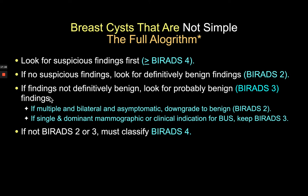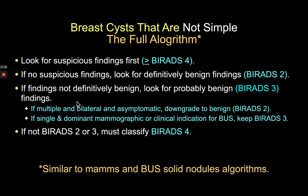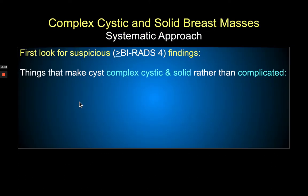We didn't want to reinvent the wheel, so we applied algorithms used for mammography and solid breast masses to cysts. This involves looking for suspicious findings first — if any are present, the whole lesion is suspicious. If no suspicious findings are found, we look for definitively benign findings. If neither applies, we fall back to BI-RADS 3. If we can't achieve that, it remains suspicious and requires biopsy — similar to how we approach mammograms and solid masses.